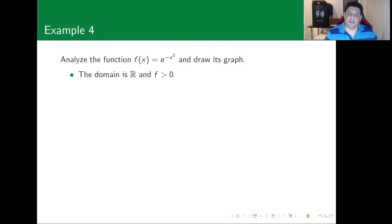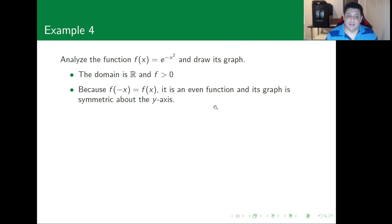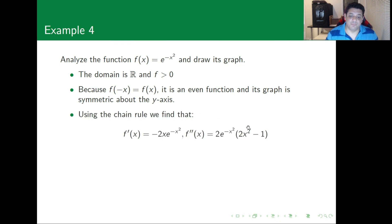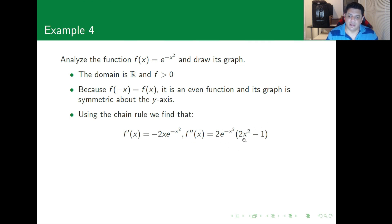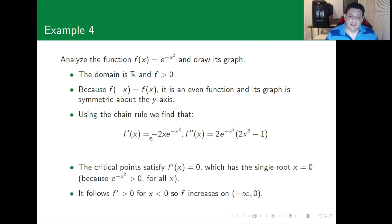The next function to analyze is f(x) = e^(-x²). This function has domain over all real numbers and is always positive. It is also an even function because plugging in a negative x gives the same result as a positive x. Using the chain rule, the first derivative is f'(x) = -2x·e^(-x²) and the second derivative is f''(x) = 2e^(-x²)(2x² - 1).